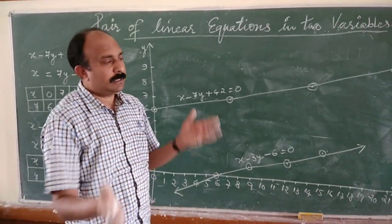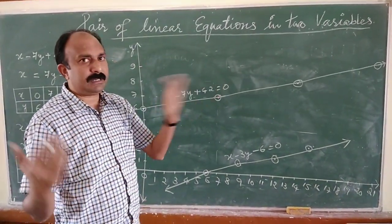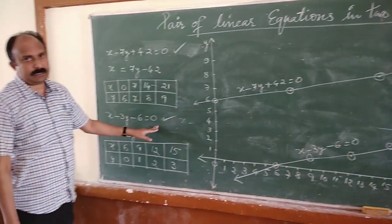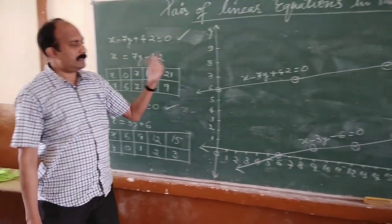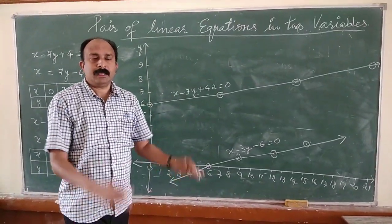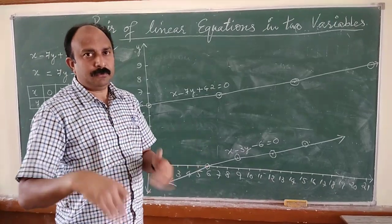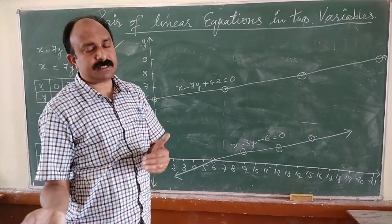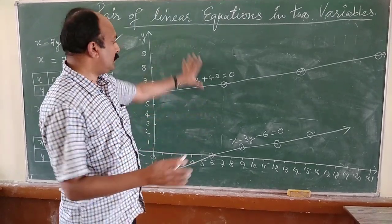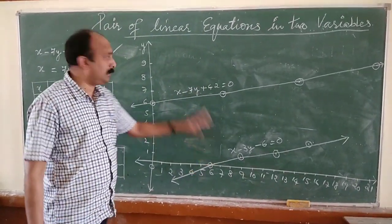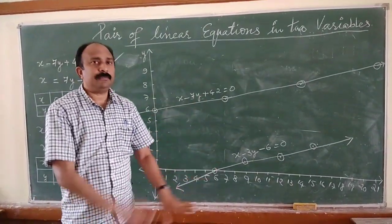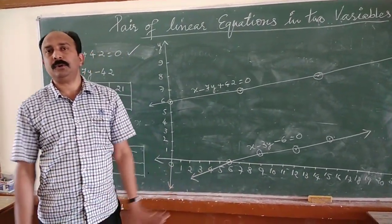The question only asks to represent it algebraically and graphically. The algebraic representation is equation 1 (x minus 7y plus 42 equals 0) and equation 2 (x minus 3y minus 6 equals 0). The graphical representation is the two straight lines drawn on the same graph paper. Both parts of the question are complete.